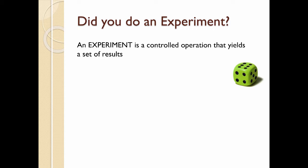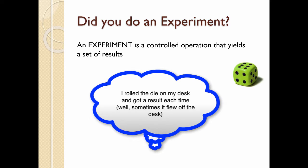First of all, let's do some terminology. Did you do an experiment? I called it an experiment, but why? Well, an experiment is a controlled operation that yields a set of results. So you rolled the die in your room or on your desk. That was pretty controlled. And that gave a set of results.